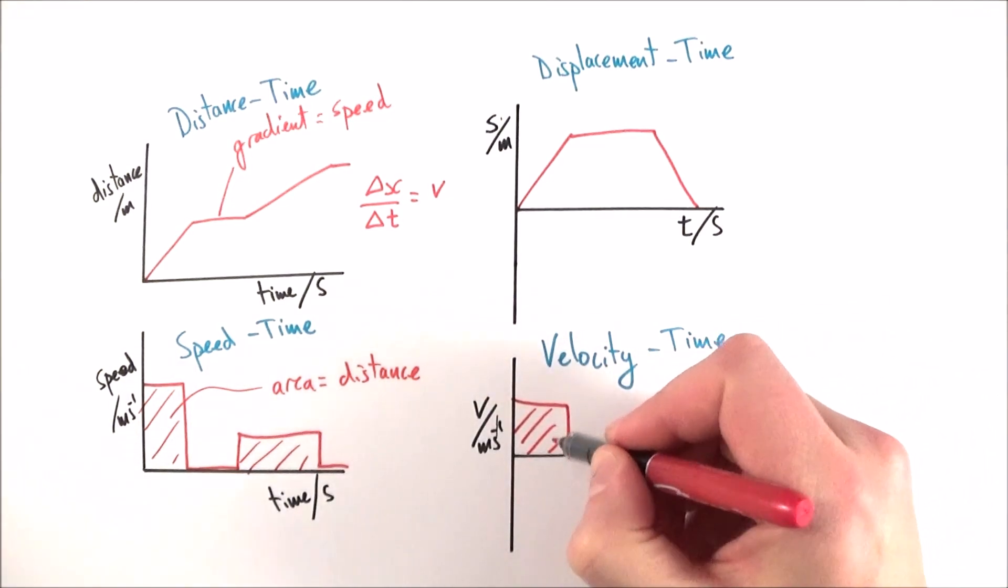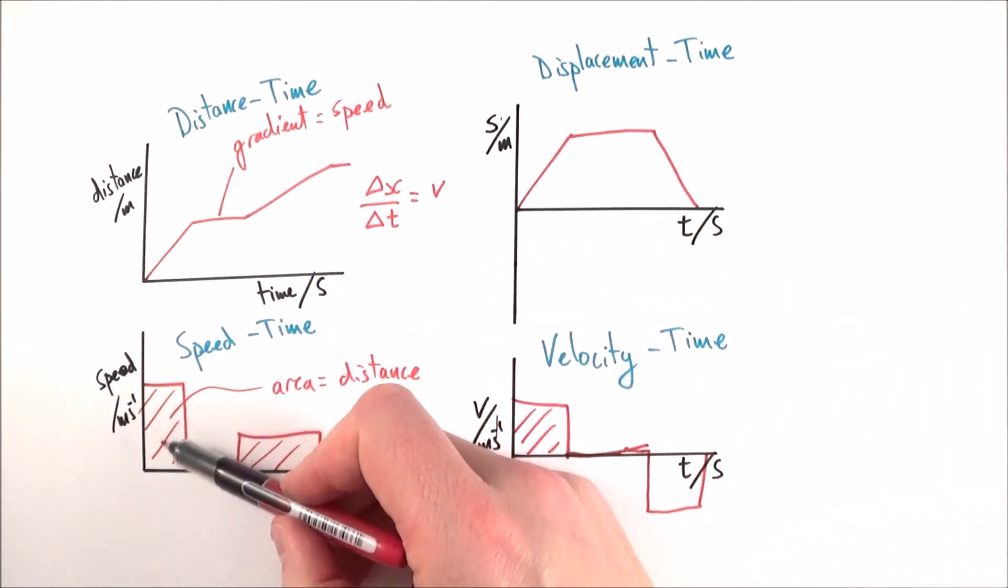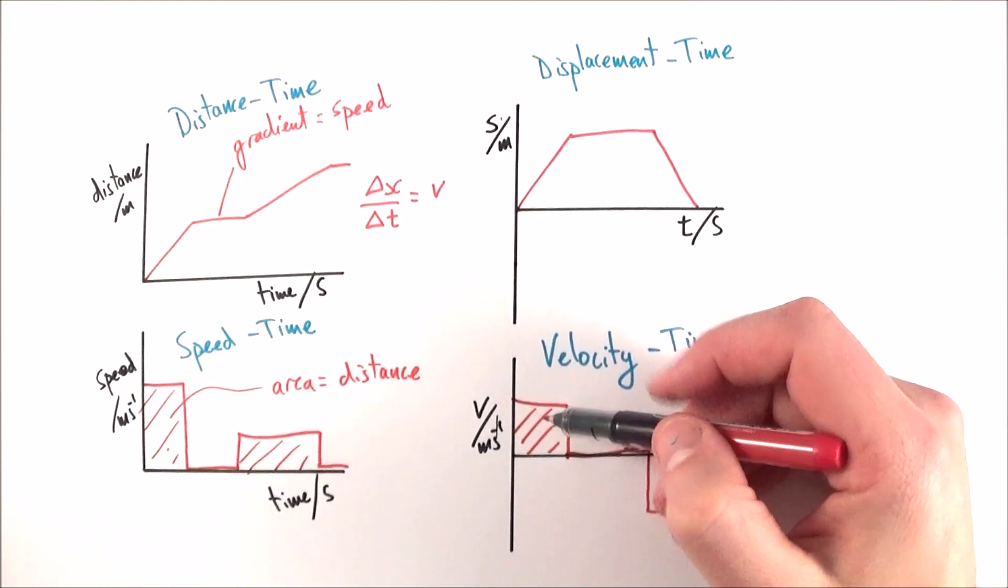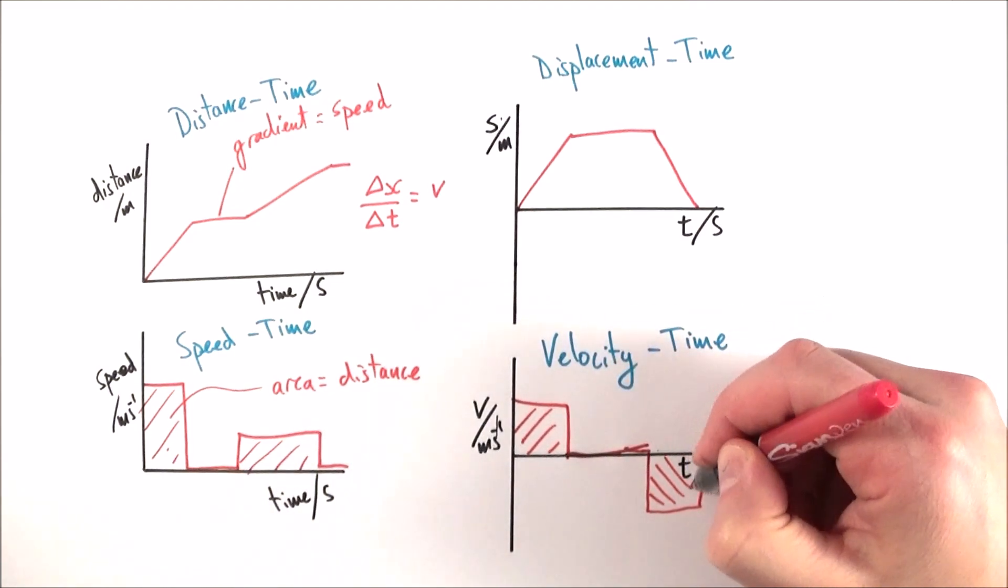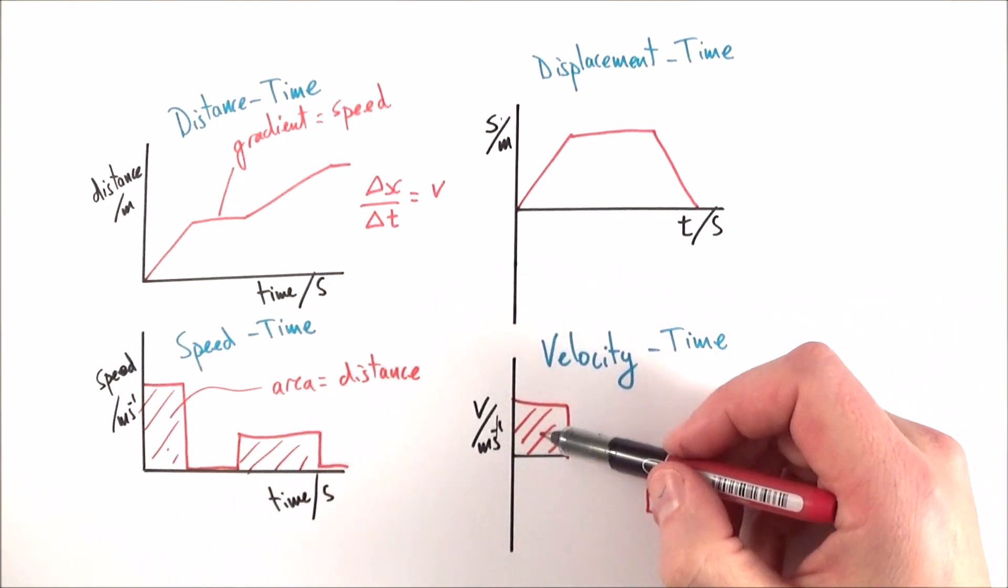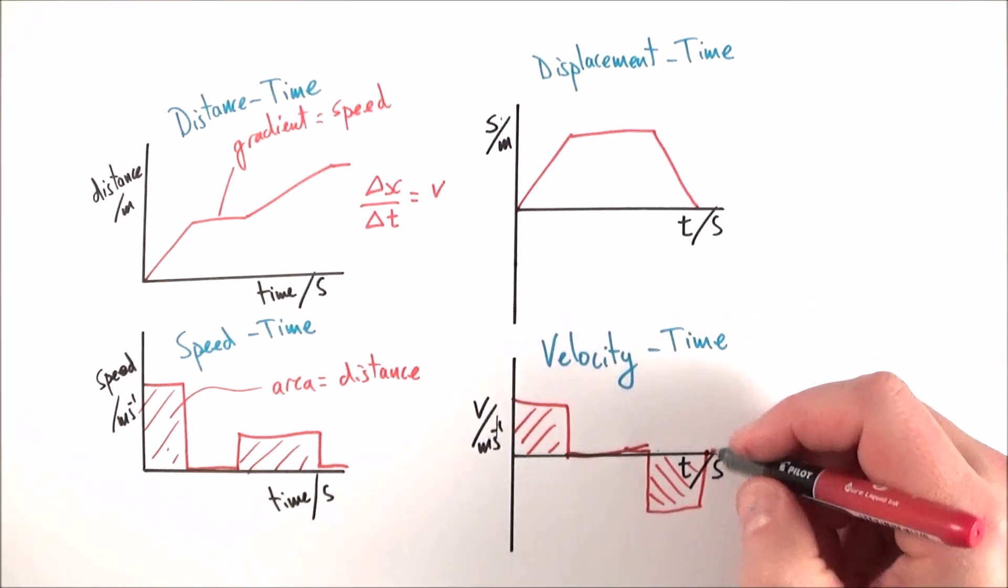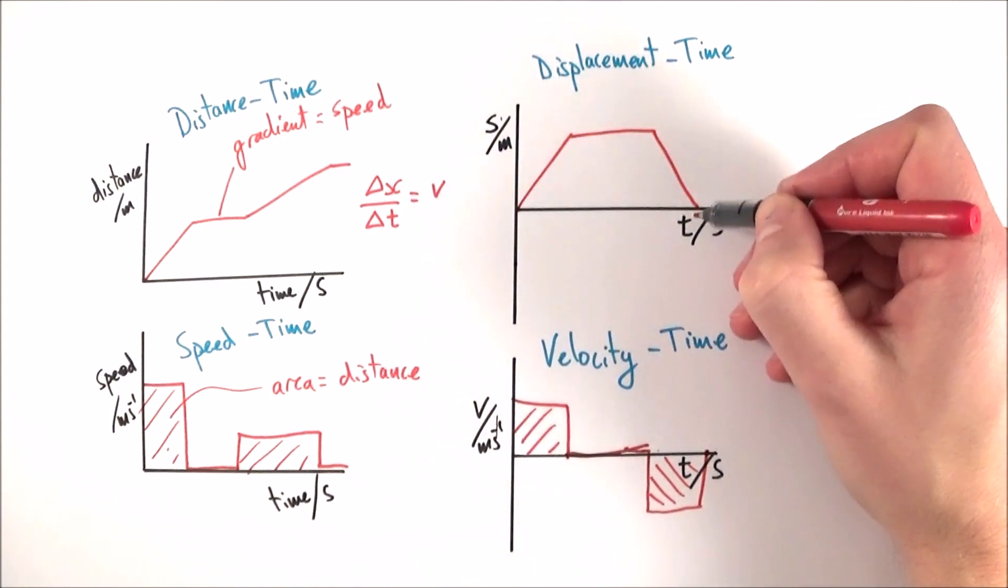And on the graph over here, I said that the area is equal to the distance travelled. So here at the end, the total distance travelled is zero metres.